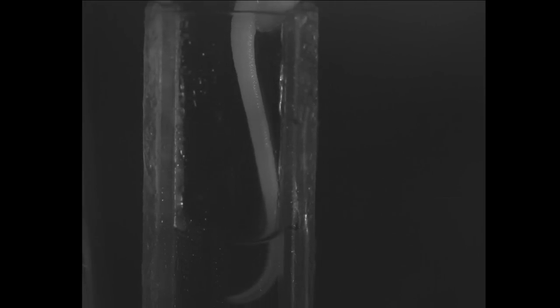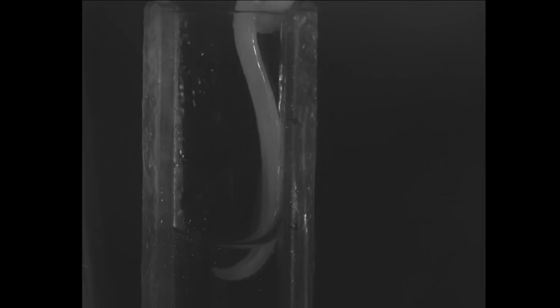These bats were trained to find their food, which is basically honey water, in artificial flowers. What we're looking at, these tubes, are basically something like an artificial flower for the bat.